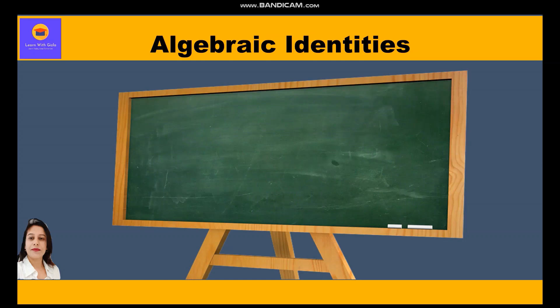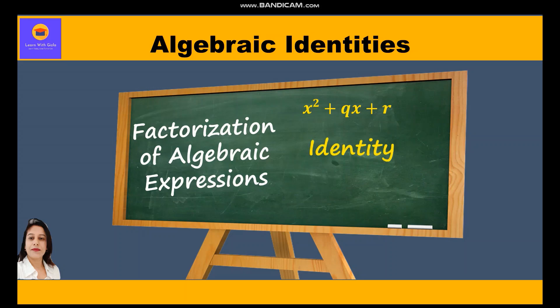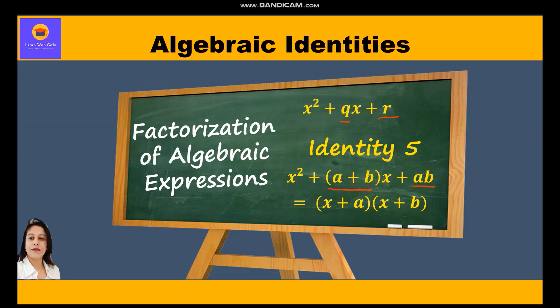In this video on algebraic identities, we are going to study the factorization of algebraic expressions of the form x² + qx + r. This is related to Identity 5: x² + (a+b)x + ab, whose factors are (x+a) and (x+b). Here, a+b equals q and ab equals r.